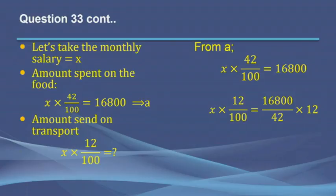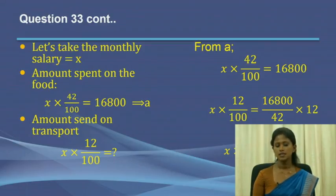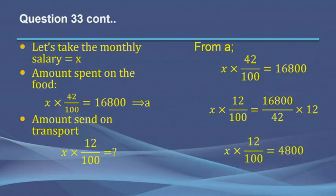Rather than finding X first and substituting it into the next equation — which is what students normally do — we can directly solve as follows. What we need to find is X multiplied by 12 over 100. We can find that amount directly, rather than separately solving for X and then taking 12% of it. We arrive at the answer: 4,800 rupees.